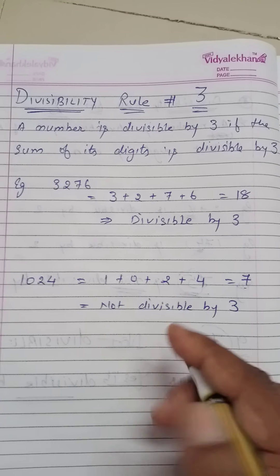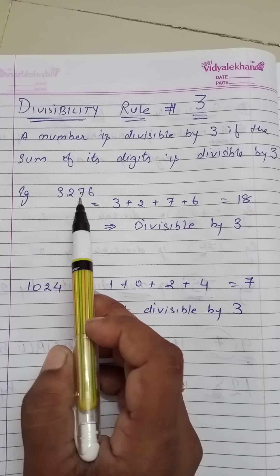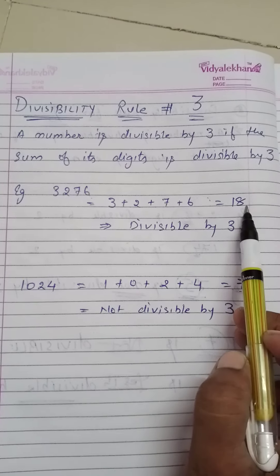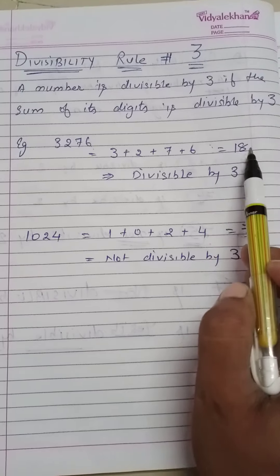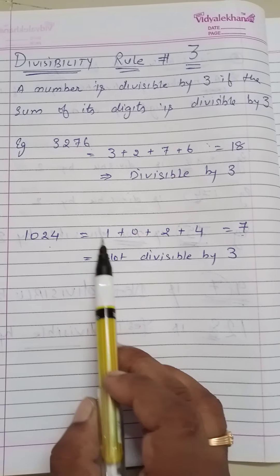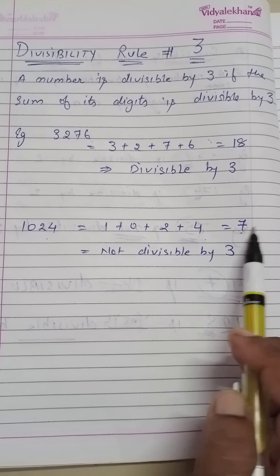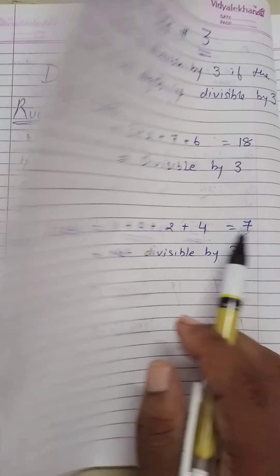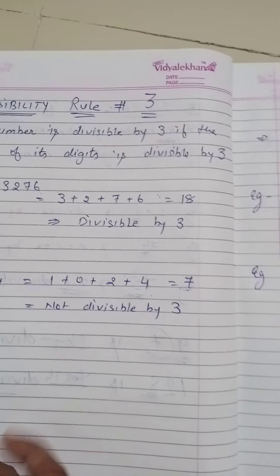Moving ahead with the divisibility rule of 3: a number is divisible by 3 if the sum of its digits is divisible by 3. For example, 3276 — if we add 3 plus 2 plus 7 plus 6, that comes to 18, and 18 is divisible by 3. Similarly, for 1024 the sum is 1 plus 0 plus 2 plus 4 which equals 7, and since 7 is not divisible by 3, the number 1024 is not divisible by 3.